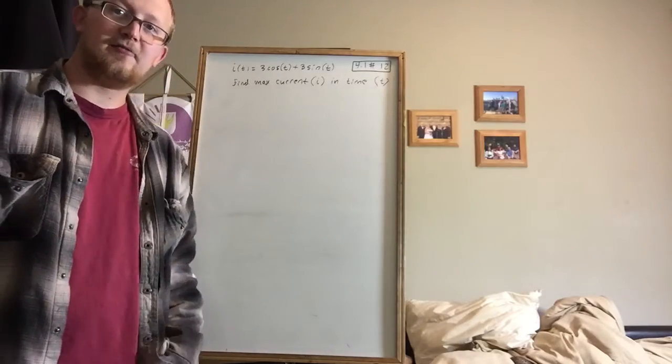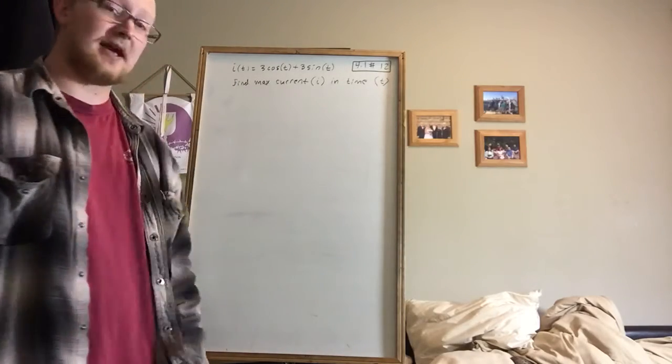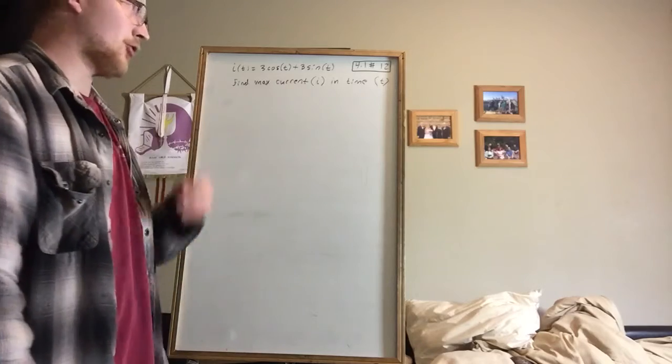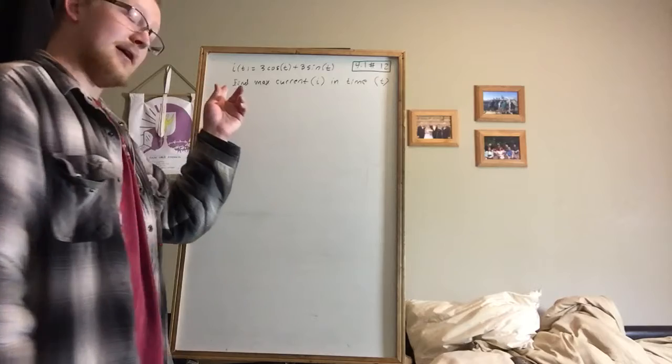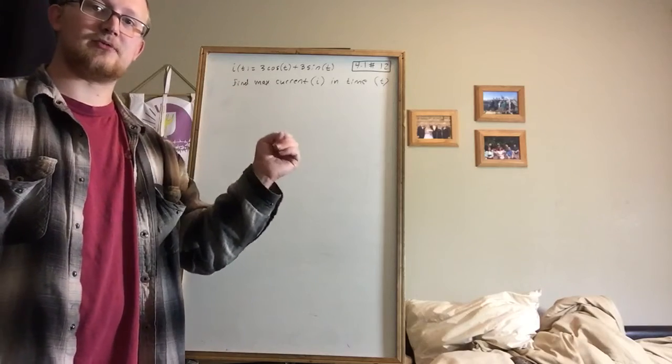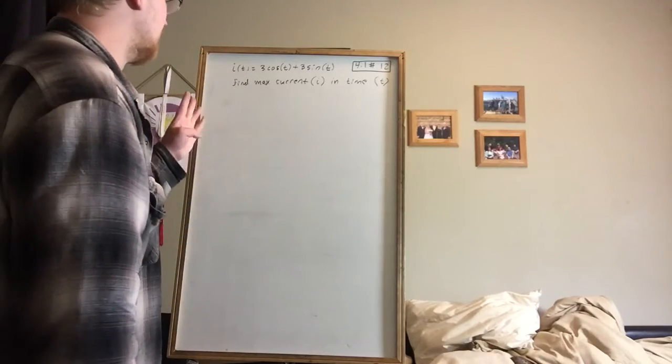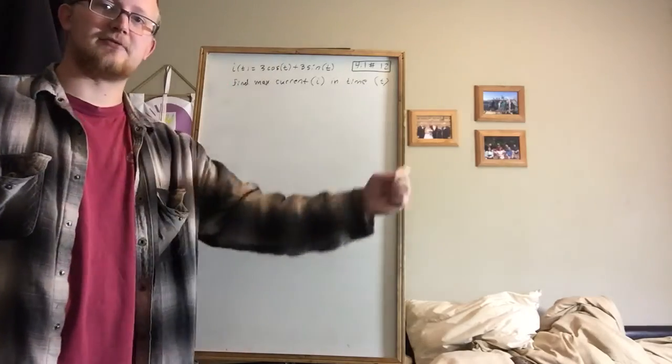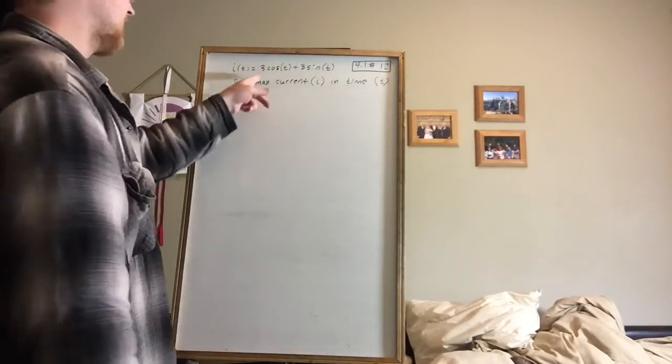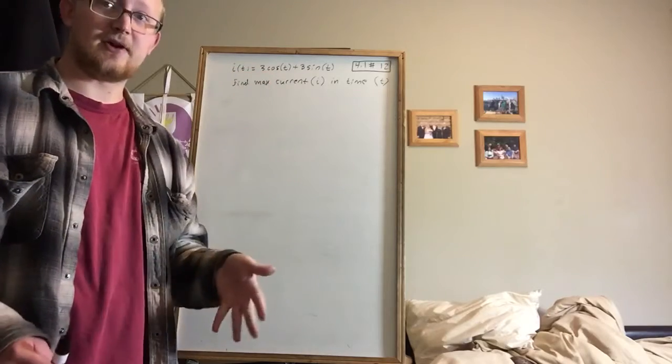Alright, we're back with an applied physics problem that's in calculus section 4.1, problem number 12. And this is a current equation, so current with respect to time. And what's going on here is there is some current, so electrons are flowing.